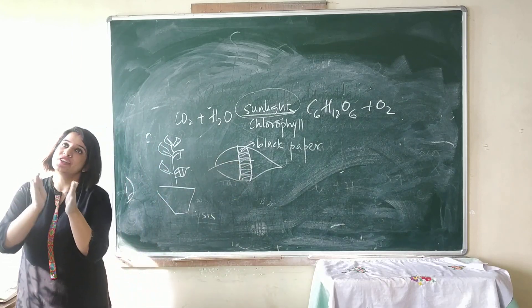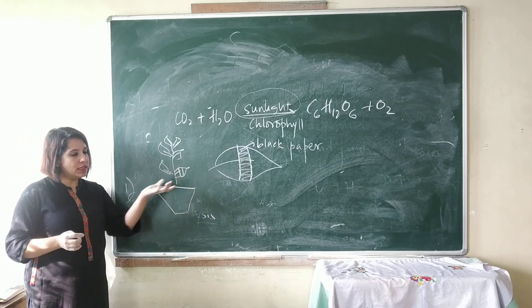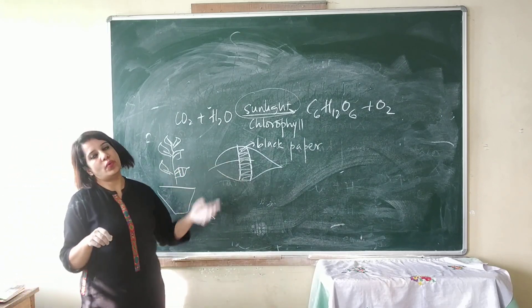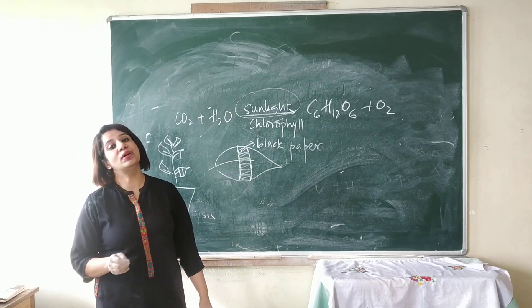What did I do? I destarched the plant, and after 48 hours, on one of the leaves, I covered half the portion with black paper. I leave it in sunlight for a few hours.